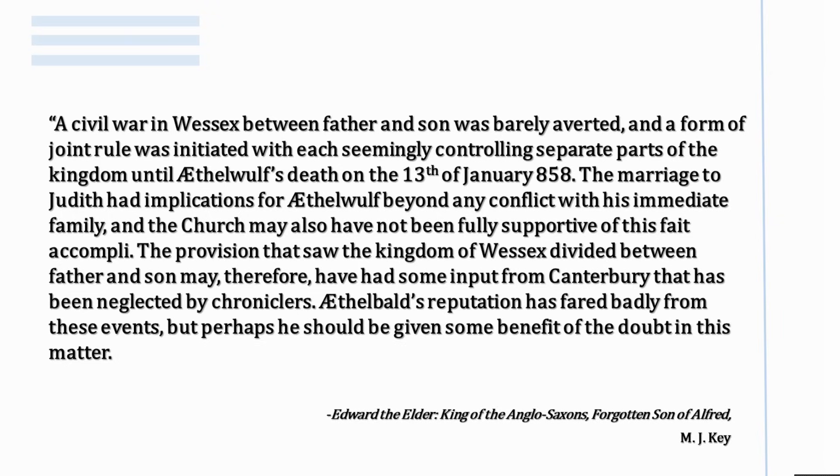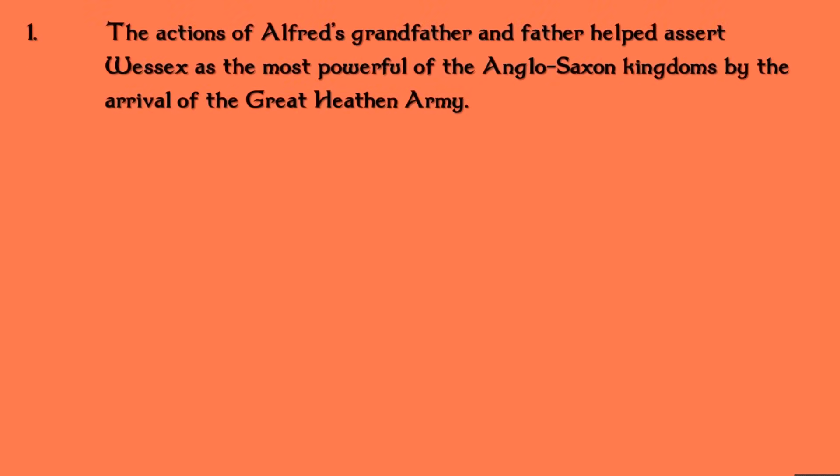I want to finish with a few takeaway points. It's a complex period before Alfred's brothers come to the throne, with Egbert and Æthelwulf and the various divisions of the kingdom. First, the actions of Alfred's grandfather and father helped assert Wessex as the most powerful of the Anglo-Saxon kingdoms by the arrival of the Great Heathen Army in 865. The situation they found in England — especially Wessex controlling all the land south of the River Thames, apart from Cornwall, which was an independent British kingdom — was largely down to the actions of Egbert and Æthelwulf.